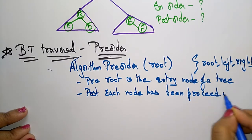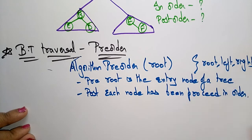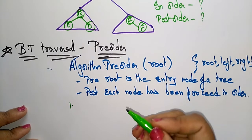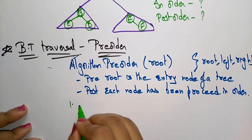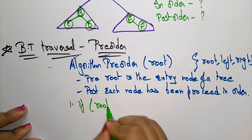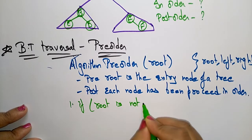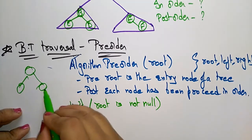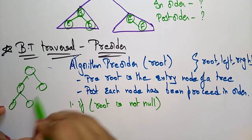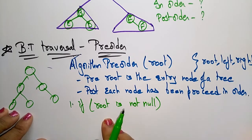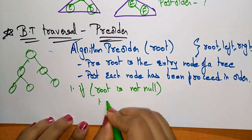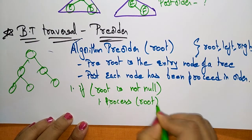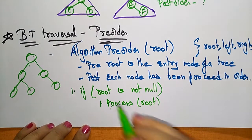Now the algorithm steps: first, check if root is not null. If root is not null, it means some nodes are present in the tree. So if root is not null, some nodes are present in the tree.